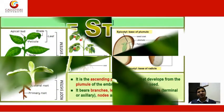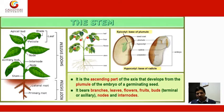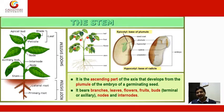The stem is the ascending part of the axis that develops from the plumule of the embryo of a germinating seed. It bears branches, leaves, flowers, fruits, and buds — both terminal and axillary buds. If you see the seed, it has a seed coat, plumule, hypocotyl, radicle, cotyledons — the complete structure is the embryo.